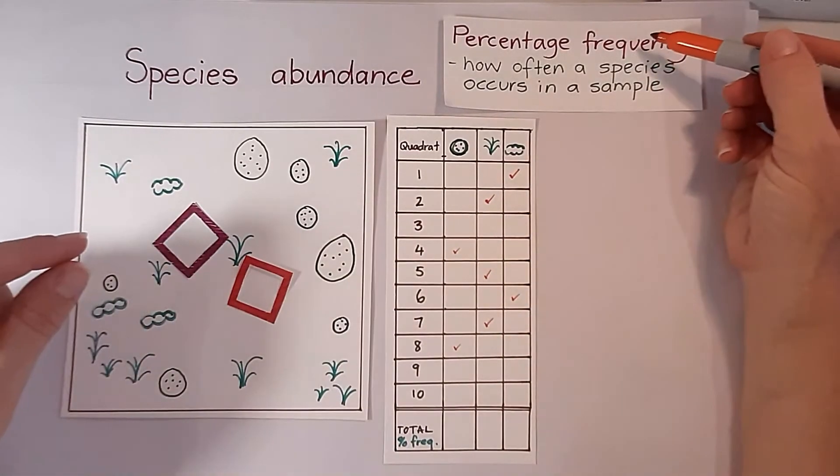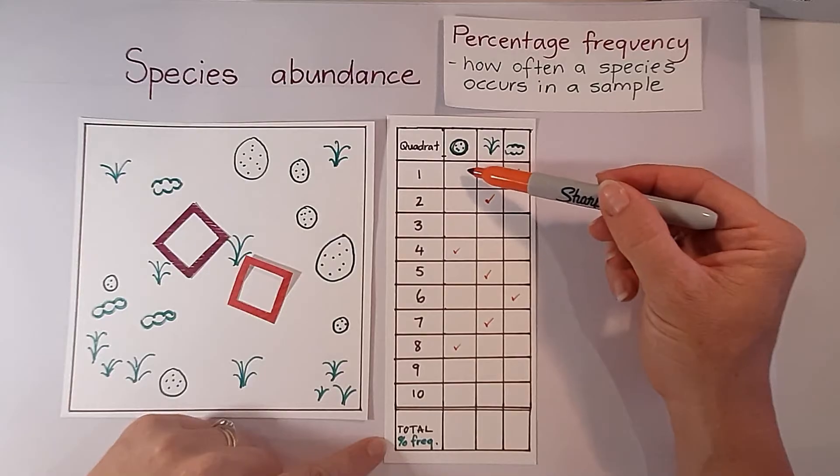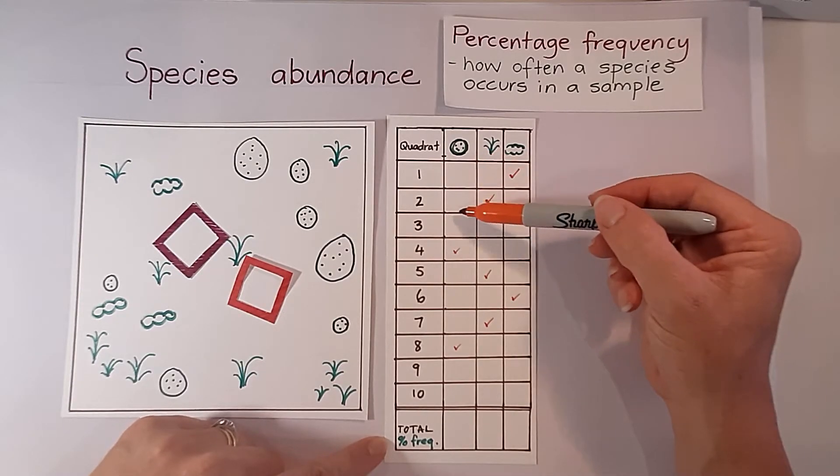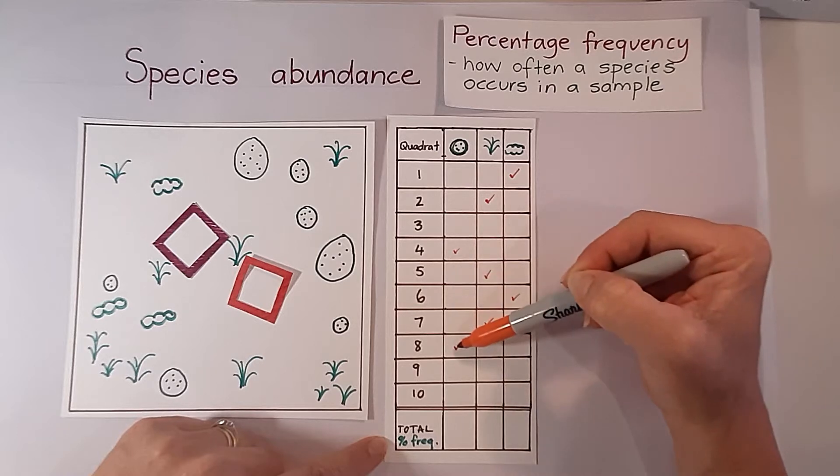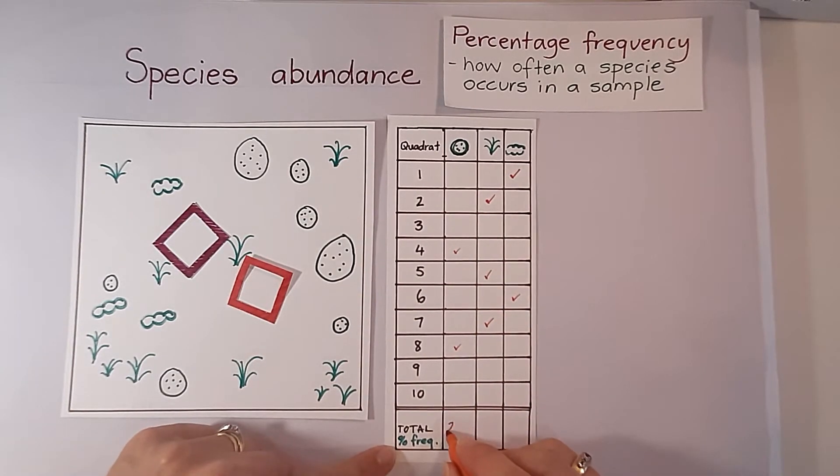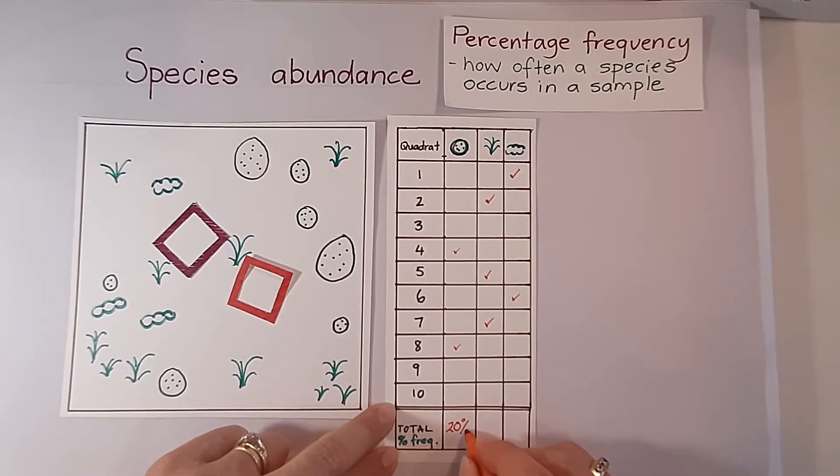So if we were to work out percentage frequency now, it is just how many times did that species appear in the quadrats. This time we had two out of the 10 quadrats, so in that case it was 20 percent frequency.